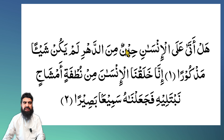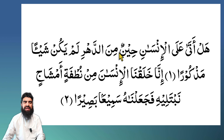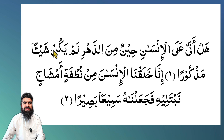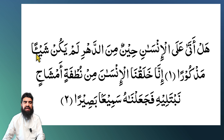حِينٌ مِّ — you have a tanween there, a double vowel, and then you have a meem, which is one of the يَرْمَلُون letters. So you are going to join it together — assimilate it: حِينًا مِّ. Then لَمْ يَكُنْ شَيْئًا — yakun has noon sakin, and after it you have a sheen, so it is إِخْفَاء again. Then you have tanween followed by a meem — so join it together for إِدْغَام.